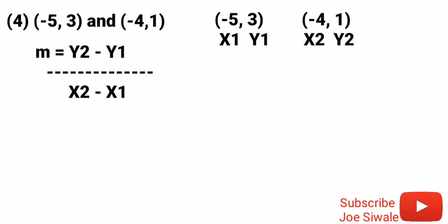So my gradient equals my y2, that's 1, minus my y1, that's 3, divided by my x2, that's negative 4, minus my x1, that's negative 5. So I'll put my negative 5 into the brackets. Then I'll say m equals 1 minus 3, that's negative 2, divided by negative 4.